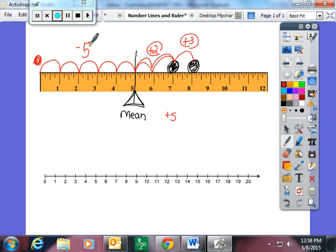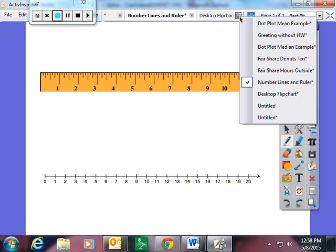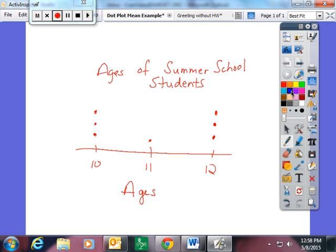And the last one I went over at the end of class, they had a lot of problems with, which I'm excited about because it means they're learning and growing and making mistakes. I have this dot plot. It is summarizing the ages of summer school students. So I asked the kids from this dot plot to find the average or mean age from the data provided. And a lot of them missed it.